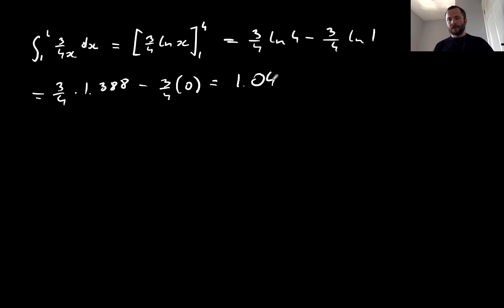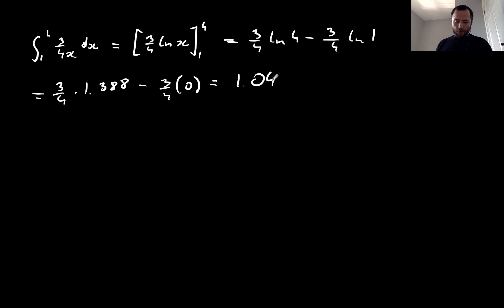So for definite integrals, the first step is to find the integral of the expression, and then once we have that expression, find the values at the boundaries, subtract, and that gives our result. That's it for today — I hope you found this useful. Next time we're going to continue with integrals and take a look at what comes next.